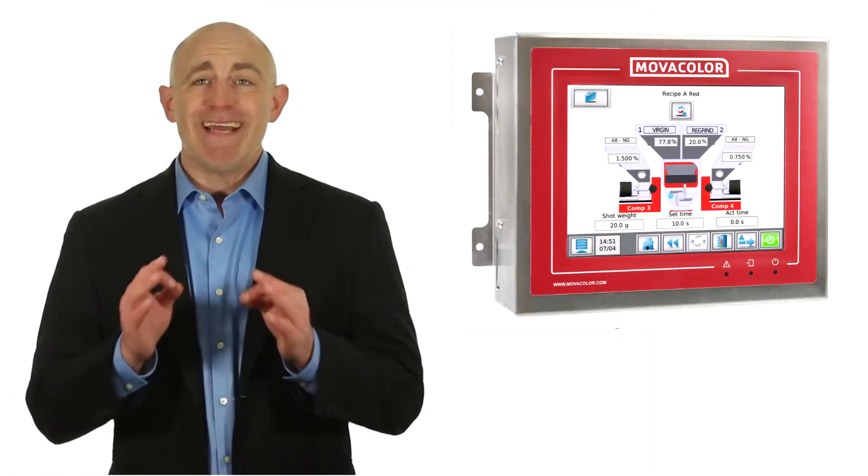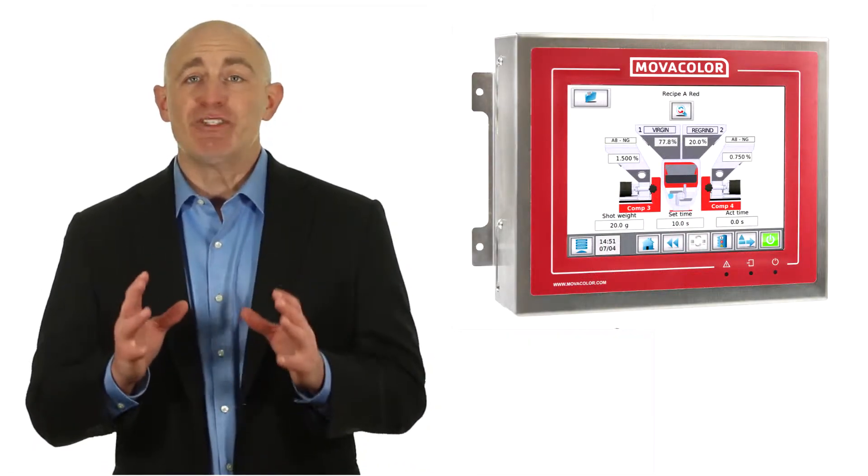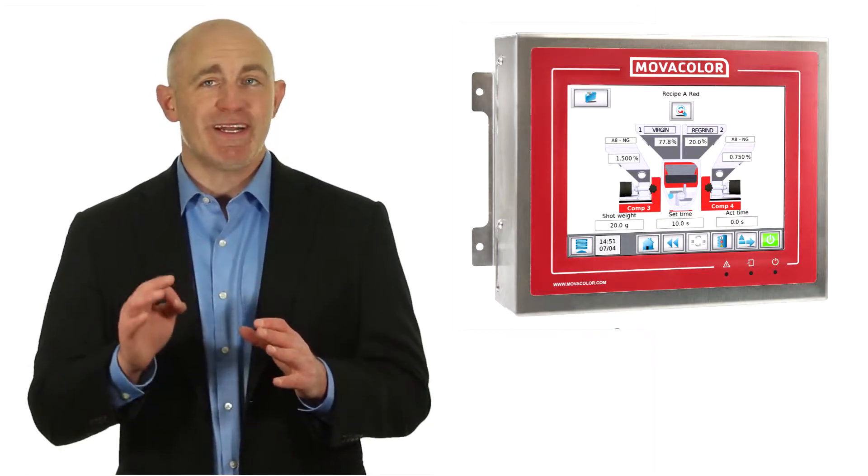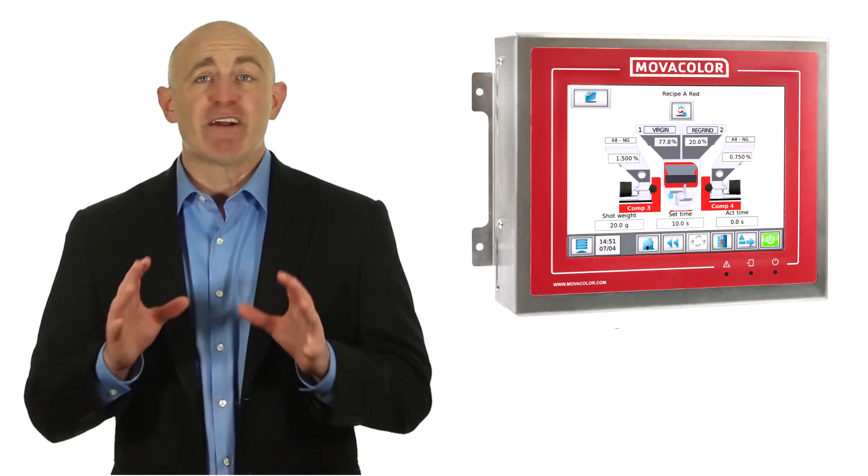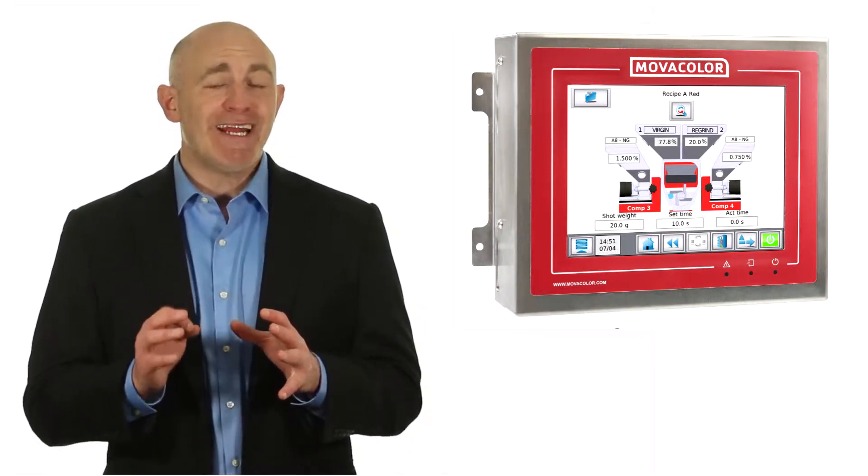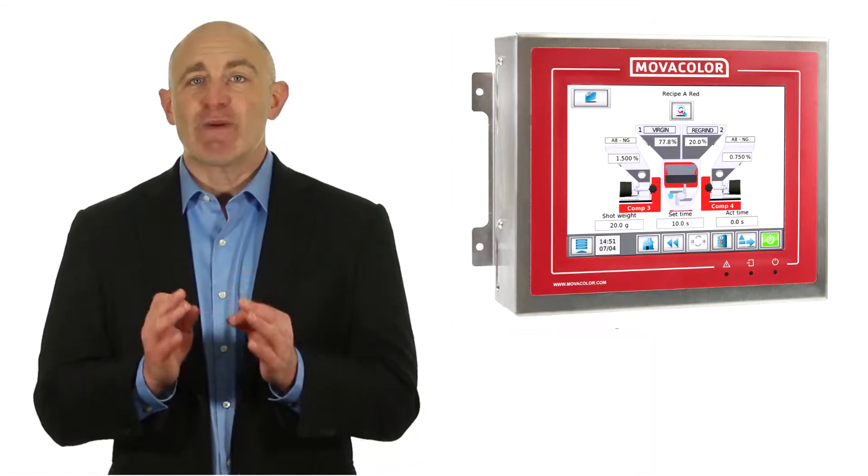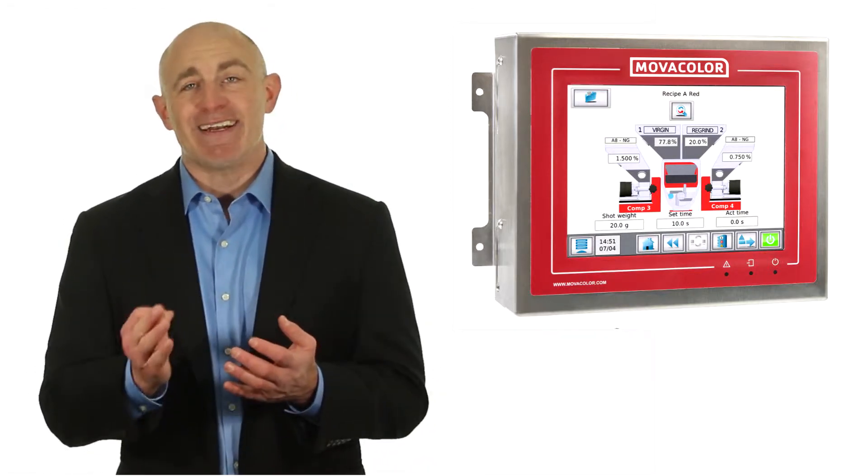The Color Touch Control makes the MC Hybrid and all of the associated feeders into a single coordinated system. If you run out of regrind, it will automatically change the feed rates of all the feeders to maintain the correct ratio of color and additives.